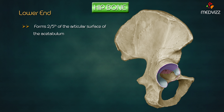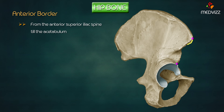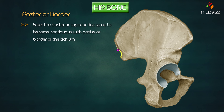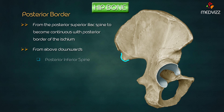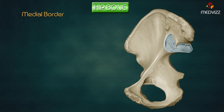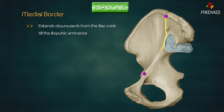The anterior border extends from the anterior superior iliac spine to the acetabulum. A small notch is present just below the spine for the lateral cutaneous nerve of the thigh. The anterior inferior spine is a projection in the lower part. The posterior border extends from the posterior superior iliac spine and becomes continuous with the posterior border of the ischium, presenting from above downwards: posterior inferior spine, greater sciatic notch, ischial spine, and lesser sciatic notch.